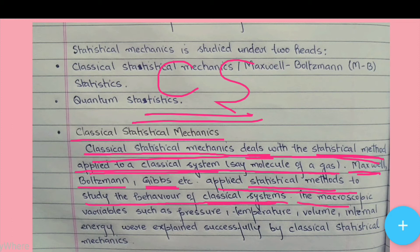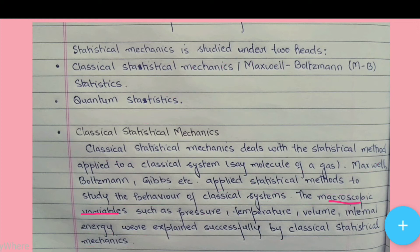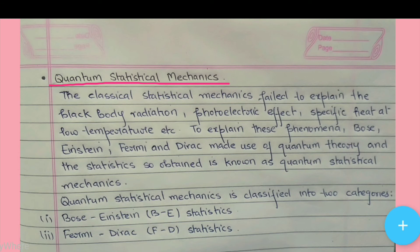The macroscopic variables such as pressure, temperature, volume, and internal energy were explained successfully by classical statistical mechanics. These things are easily explained using classical statistical mechanics.